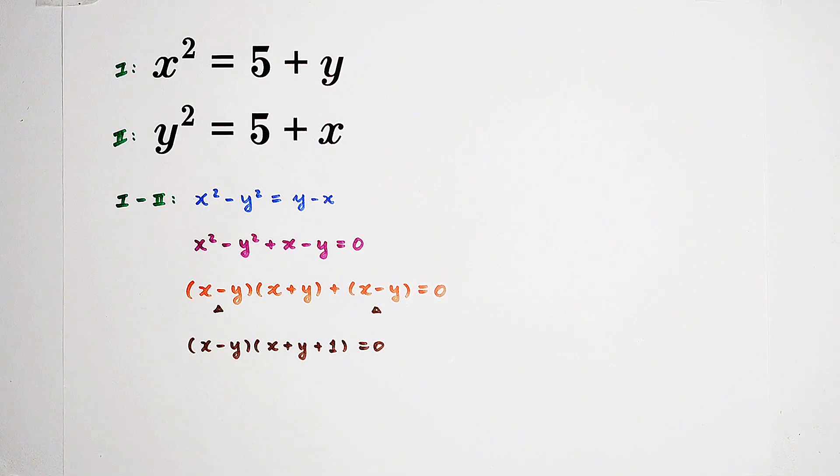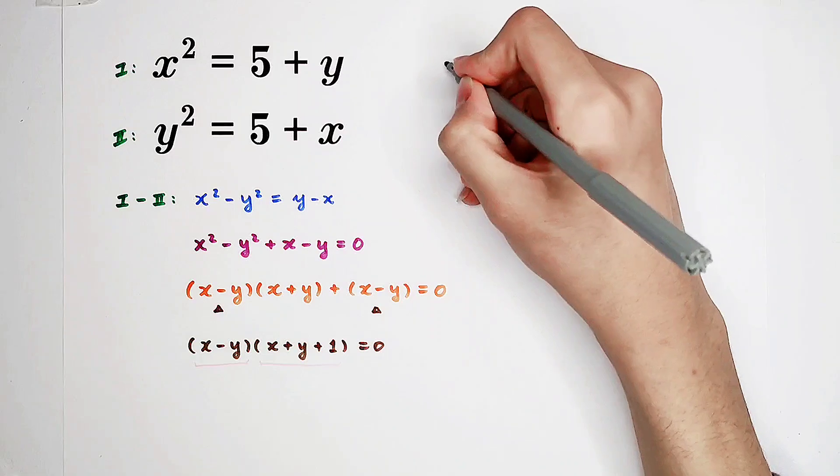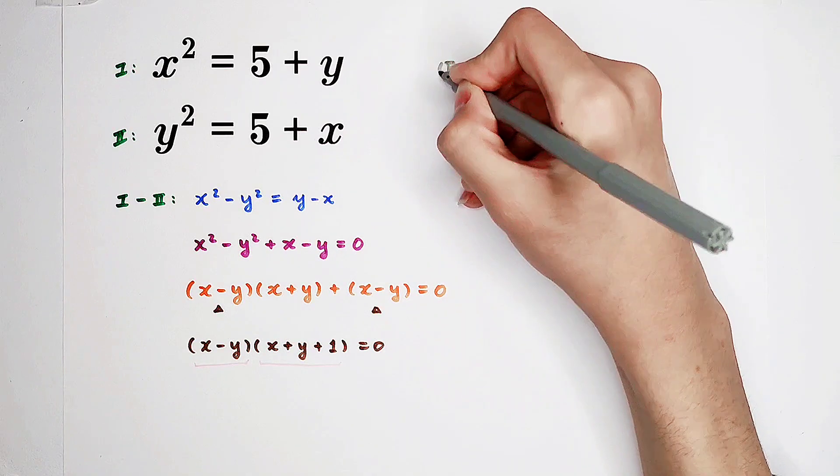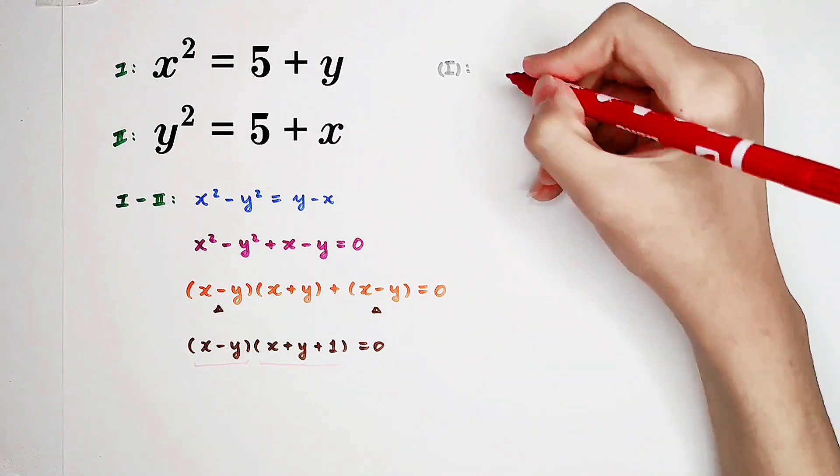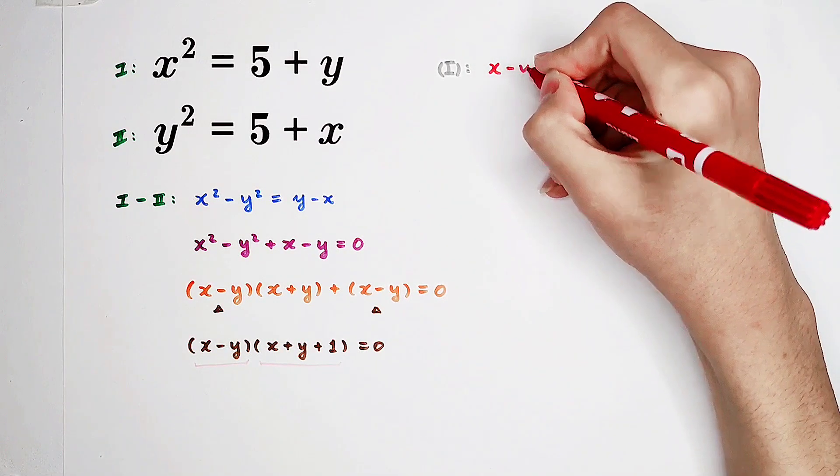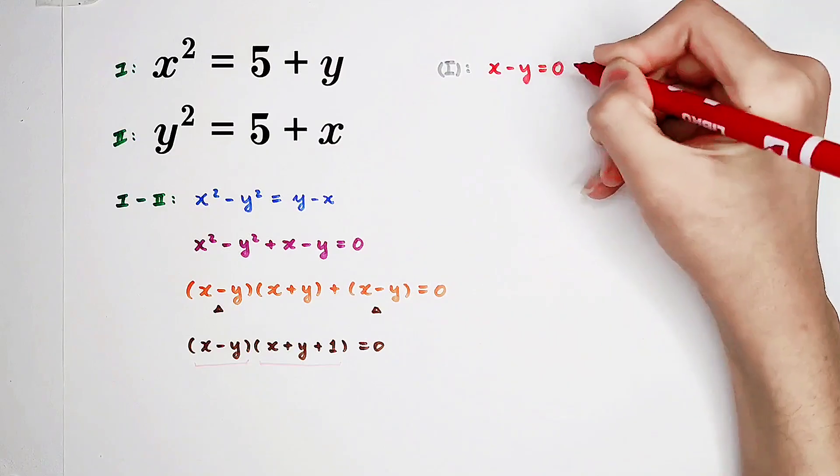Now, very happy. Why? Since we have a product on the left-hand side and 0 on the right-hand side, there are two possibilities. First one: if x minus y equals 0, that means x equals y. They are equal.